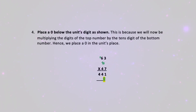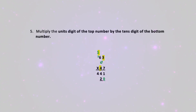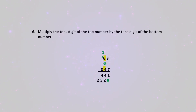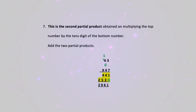Step 4: place a 0 below the units digit as shown. This is because we will now be multiplying the digit of the top number by the tens digit of the bottom number — hence we place a zero in the units place. Step 5: multiply the units digit of the top number by the tens digit of the bottom number. Step 6: multiply the tens digit of the top number by the tens digit of the bottom number.